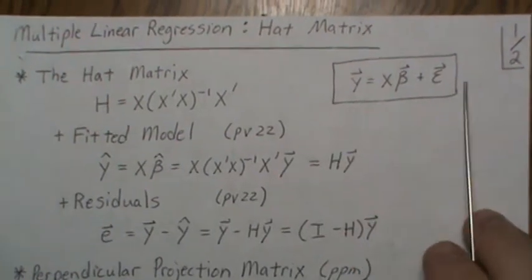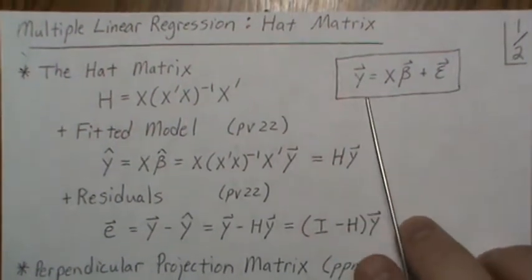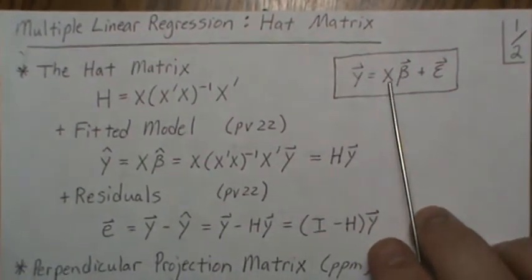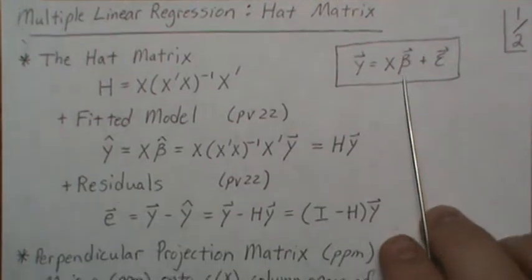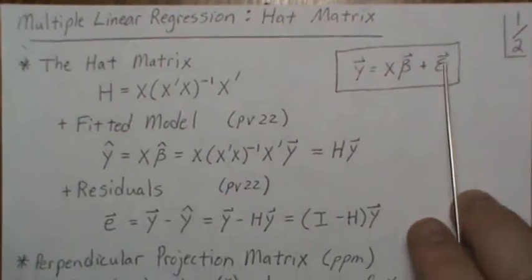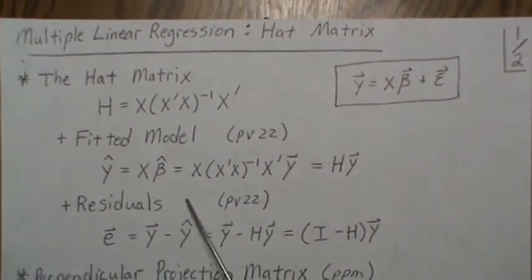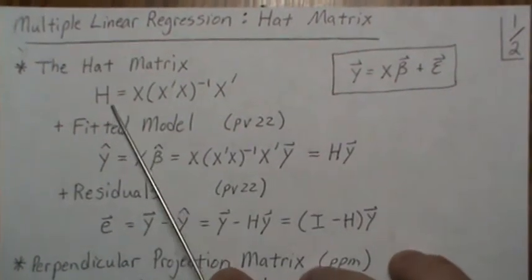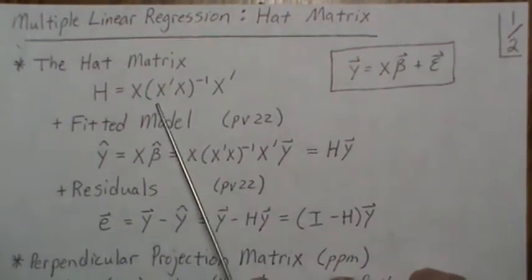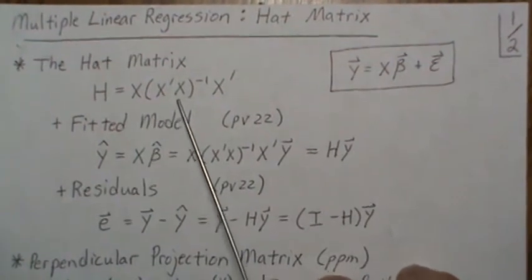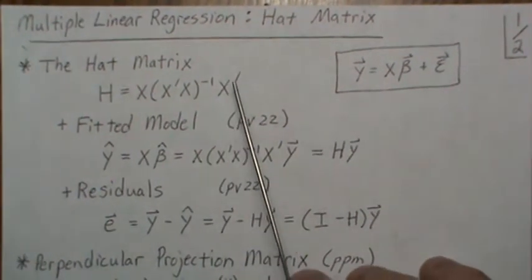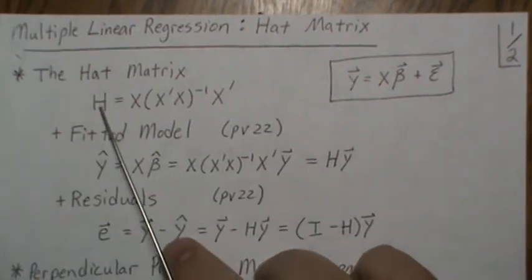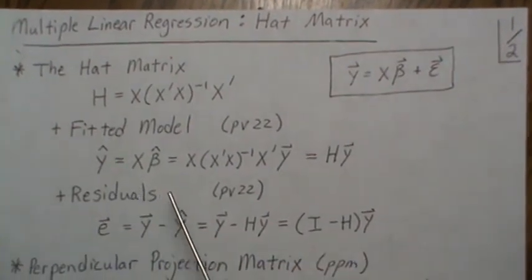As a reminder, this is the multiple linear regression model. It's y, this n by one vector, this is a design matrix, it's the matrix of beta parameters and epsilon. Now in deriving the least squares estimates we kept seeing this matrix multiplication x transpose x inverse x transpose, and we started calling it just h and it's called the hat matrix.